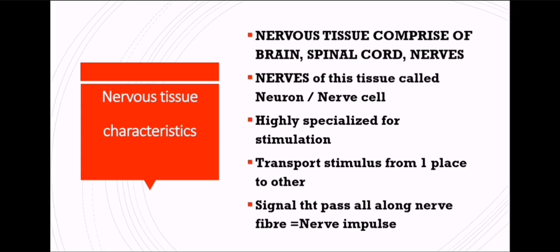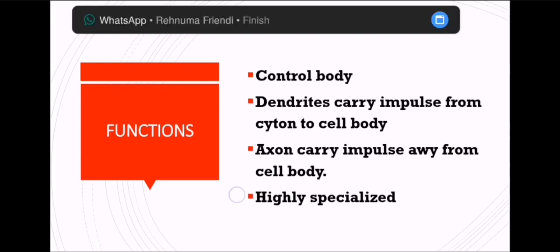Neurons are highly specialized for stimulation. Whenever we want to send any message directly to the brain, it is because of your nerve cell or neuron that your brain receives it. For example, when you pluck a rose and the thorn hits you, it is because of the neurons present there that the message goes directly to your brain and spinal cord and you know there is a hurt in your finger. They transport stimulus from one point to another, and the signal passing along the nerve fiber is called a nerve impulse.